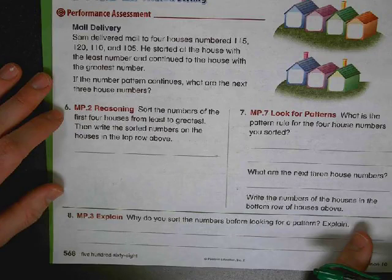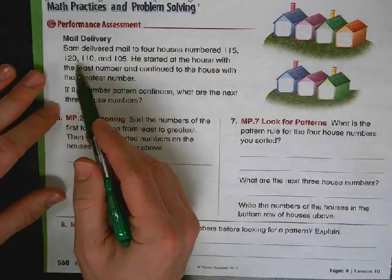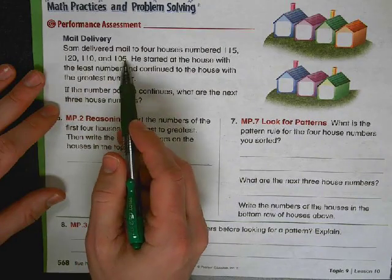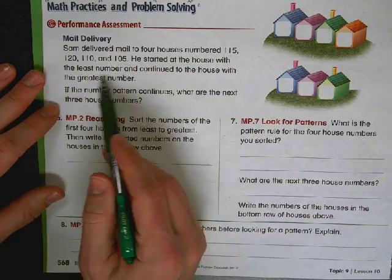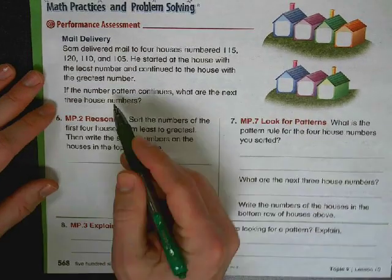Flip it over. I would pause it and write it in there on the back. It says Sam delivered mail to four houses numbered 115, 120, 110, and 105. He started at the house with the least number and continued to the house with the greatest number. If the number pattern continues, what are the next three house numbers?